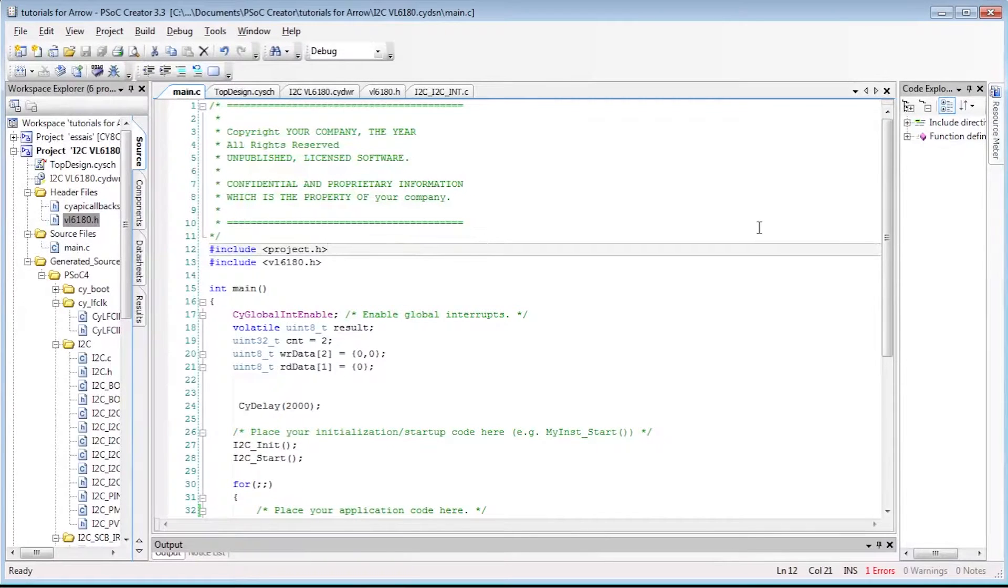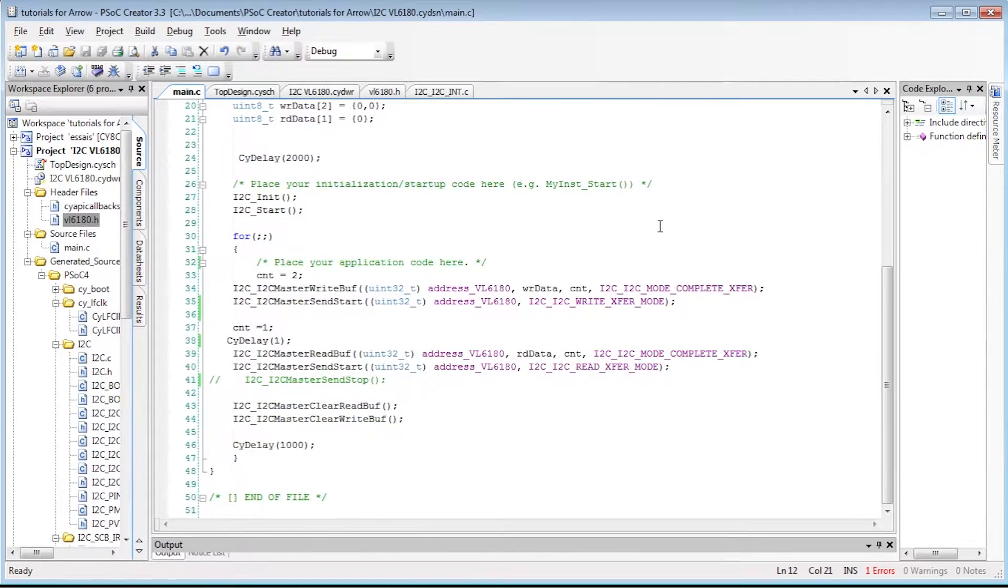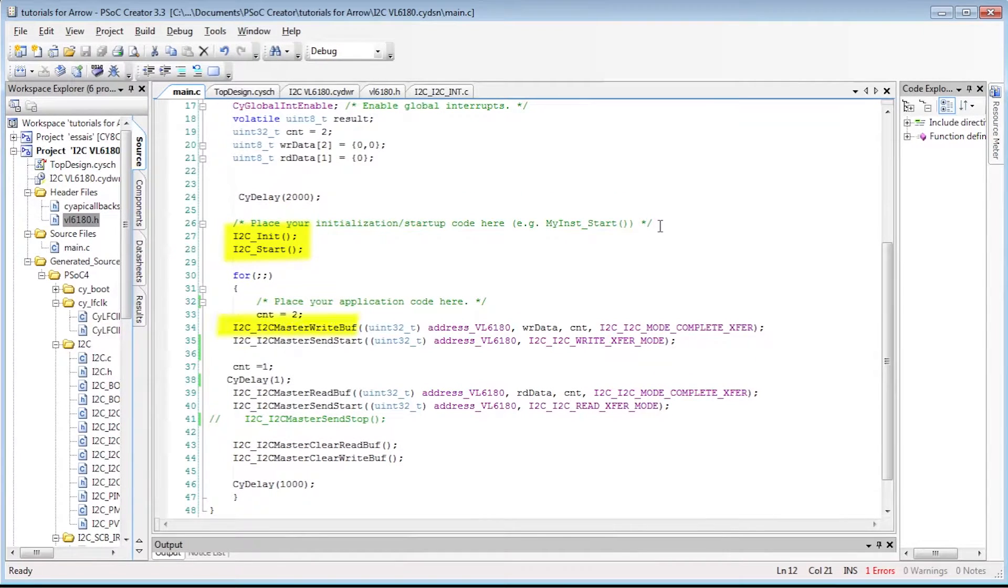Following the given APIs, the program is simple. We initialize and start the I2C block. I2C master write buff method writes the reference data buffer to a specified slave address. We want a complete transfer from start to stop, so the transfer mode is I2C mode complete. The I2C master send start method generates a start condition and sends at the specified slave address.